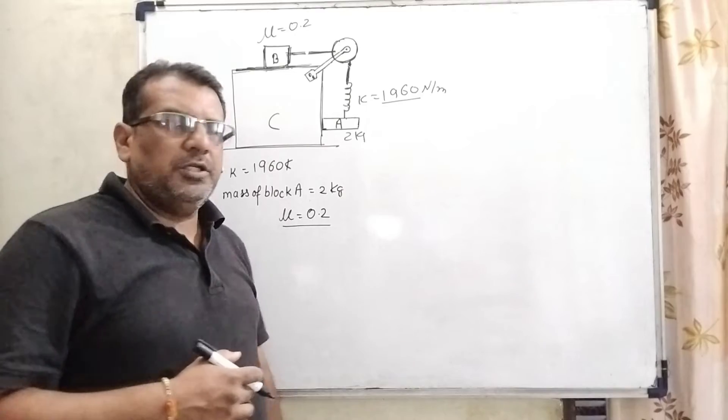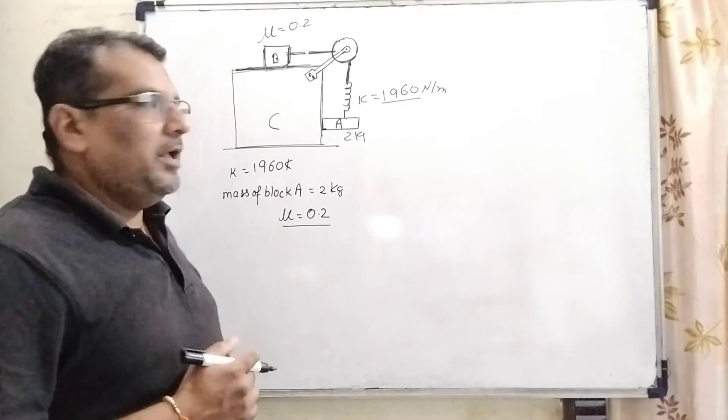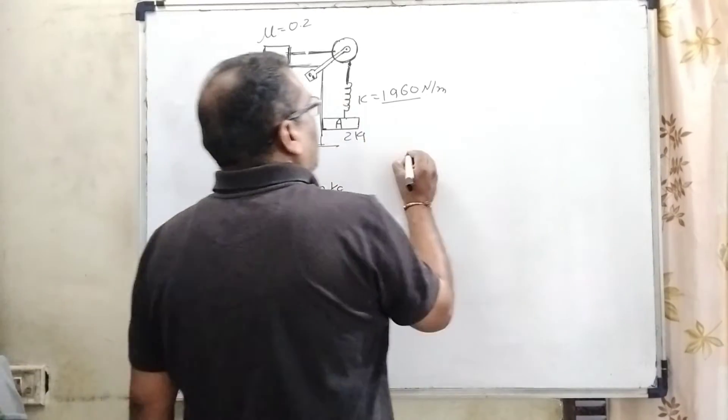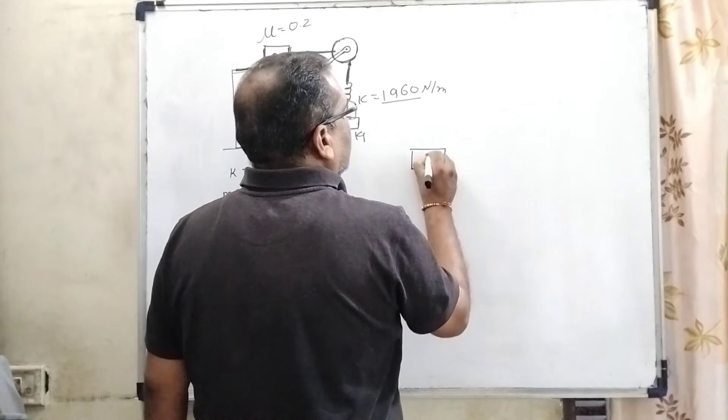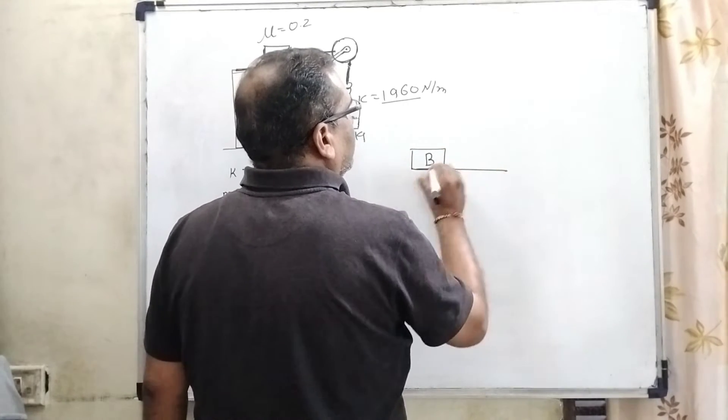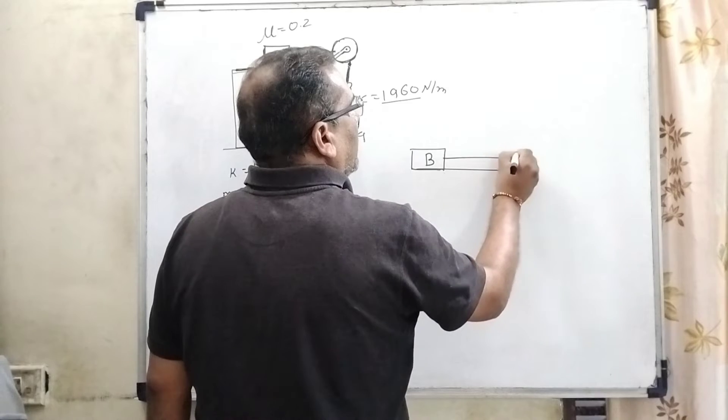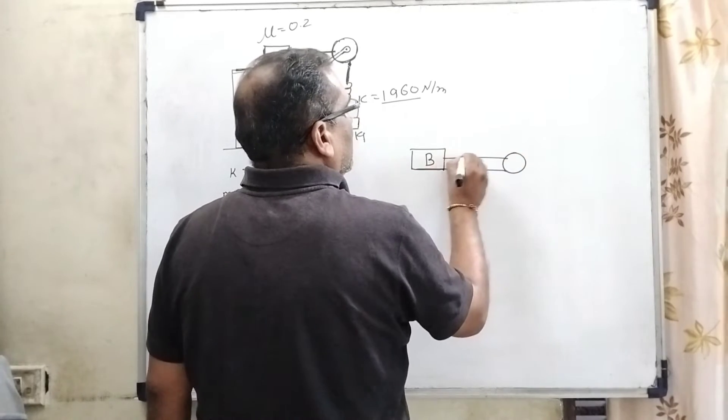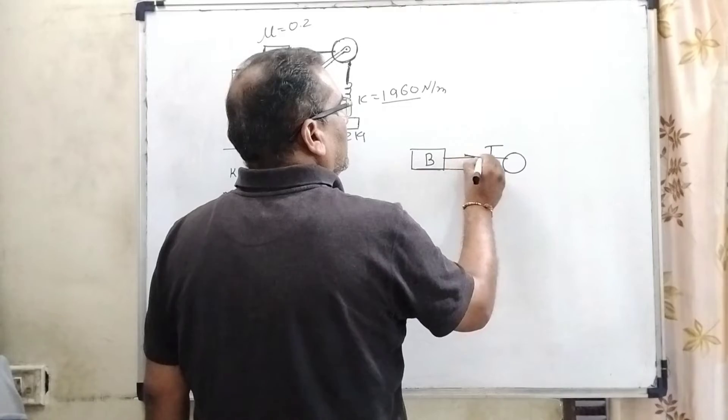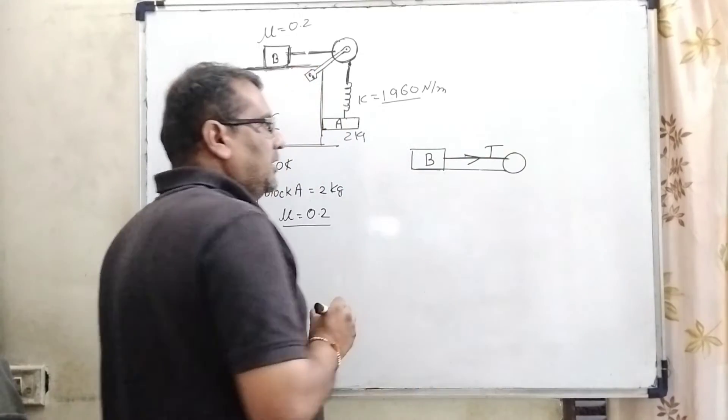Before solving the question, let us first draw free body diagrams. Block B: Starting from B, you can see that B is connected with the spring and passing over this pulley, so therefore tension T is applied on the string.